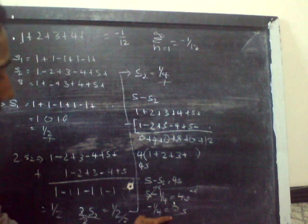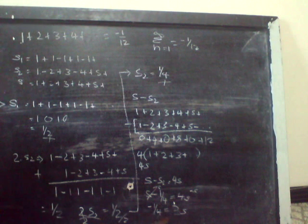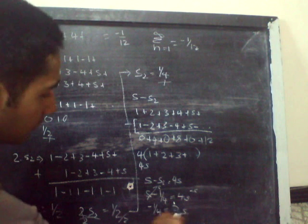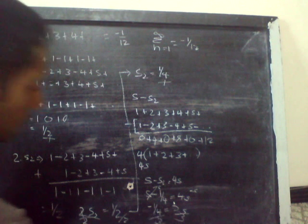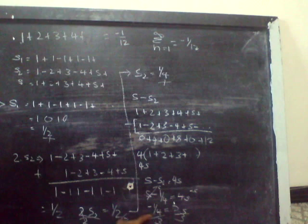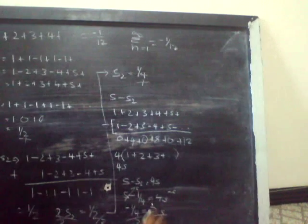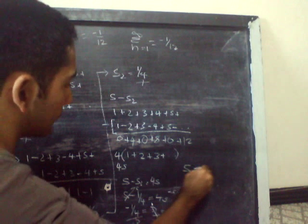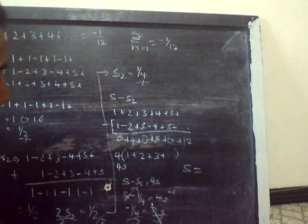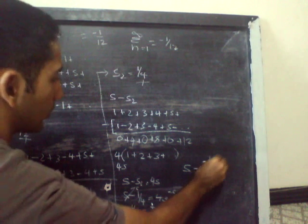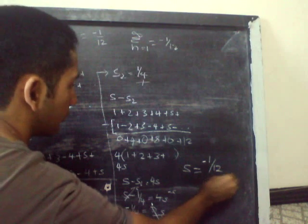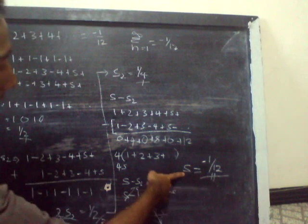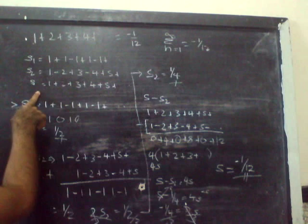We have negative 1/4 is equal to negative 3S. 4S minus S, we have 3S here. Now I will just get rid of this 3. So divide it by 3 and divide it by 3. Negative 1/4 divided by 3. S is equal to negative 1/4 divided by 3, which is negative 1 over 12.